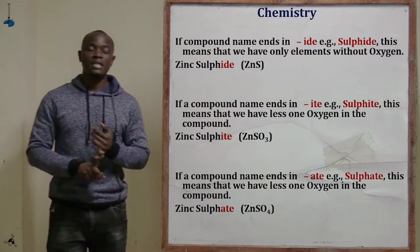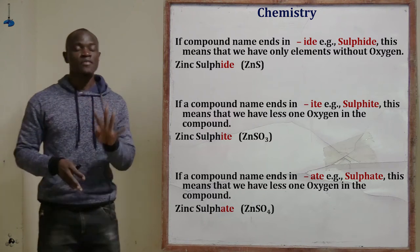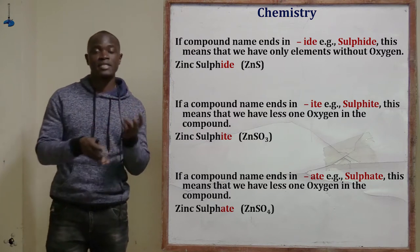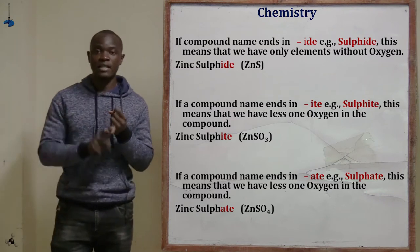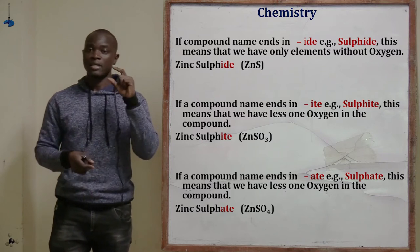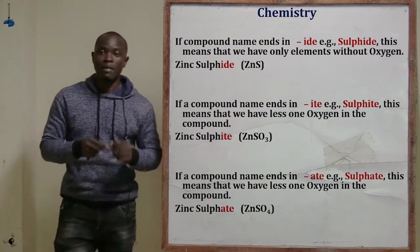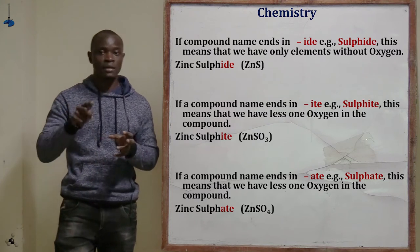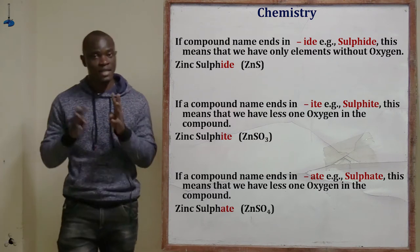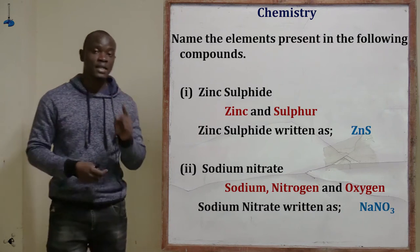Remember: if it is a sulfate, it means that it has oxygen with four oxygen atoms. If it is a sulfide, it ends with -ide, meaning it is only that single element — just sulfur, no oxygen. If it ends with -ate it means four oxygens are present, and if it ends with -ite it means three oxygens are present in the structure.